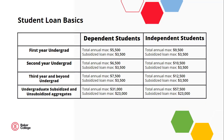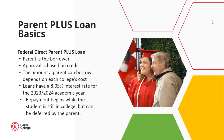If the amounts the student can borrow are not enough to cover costs, there are private loan options available through private lenders. Oftentimes private loans do require co-signers. There are many different private loan lenders who will offer different loan products, so be sure to do your research before deciding on private loans. There is one final federal loan option available to help cover college costs for dependent students — the Federal Direct Parent PLUS Loan.